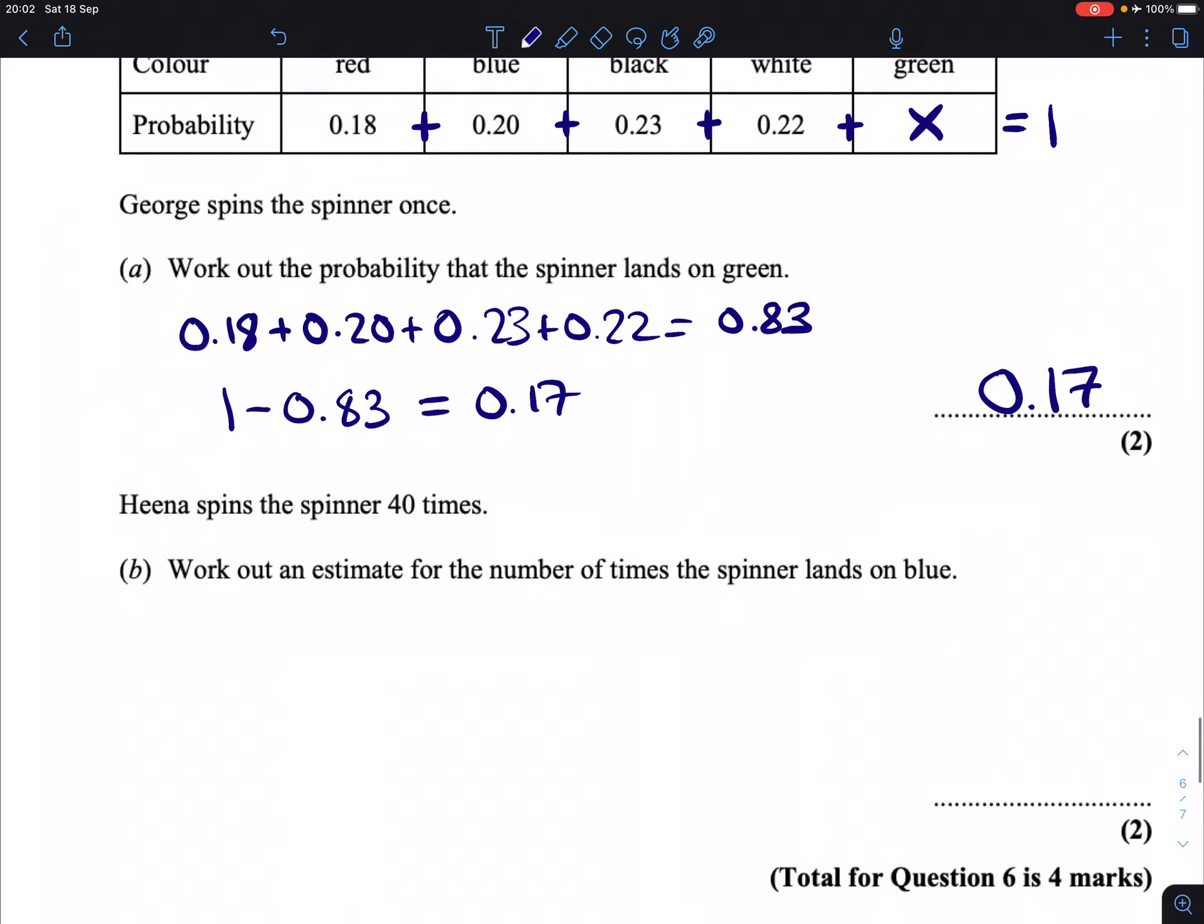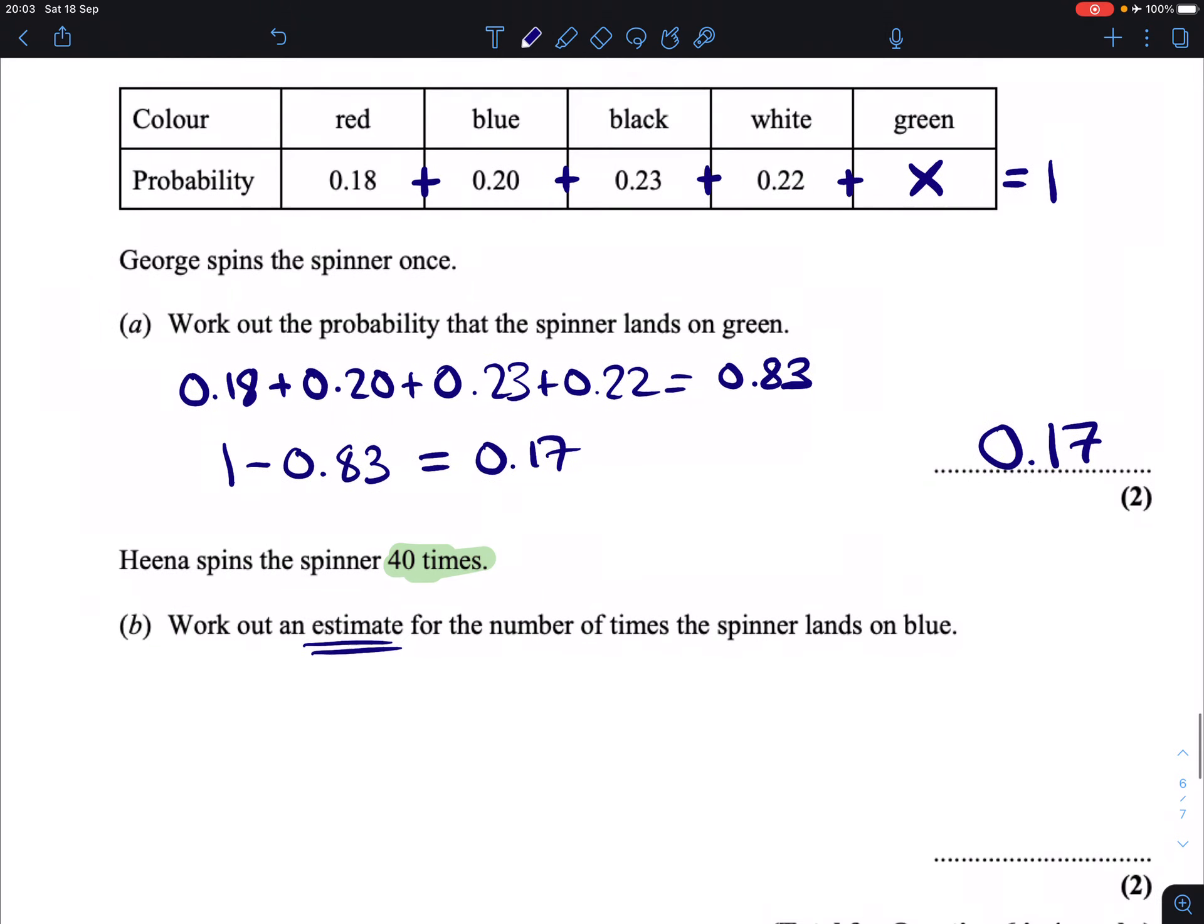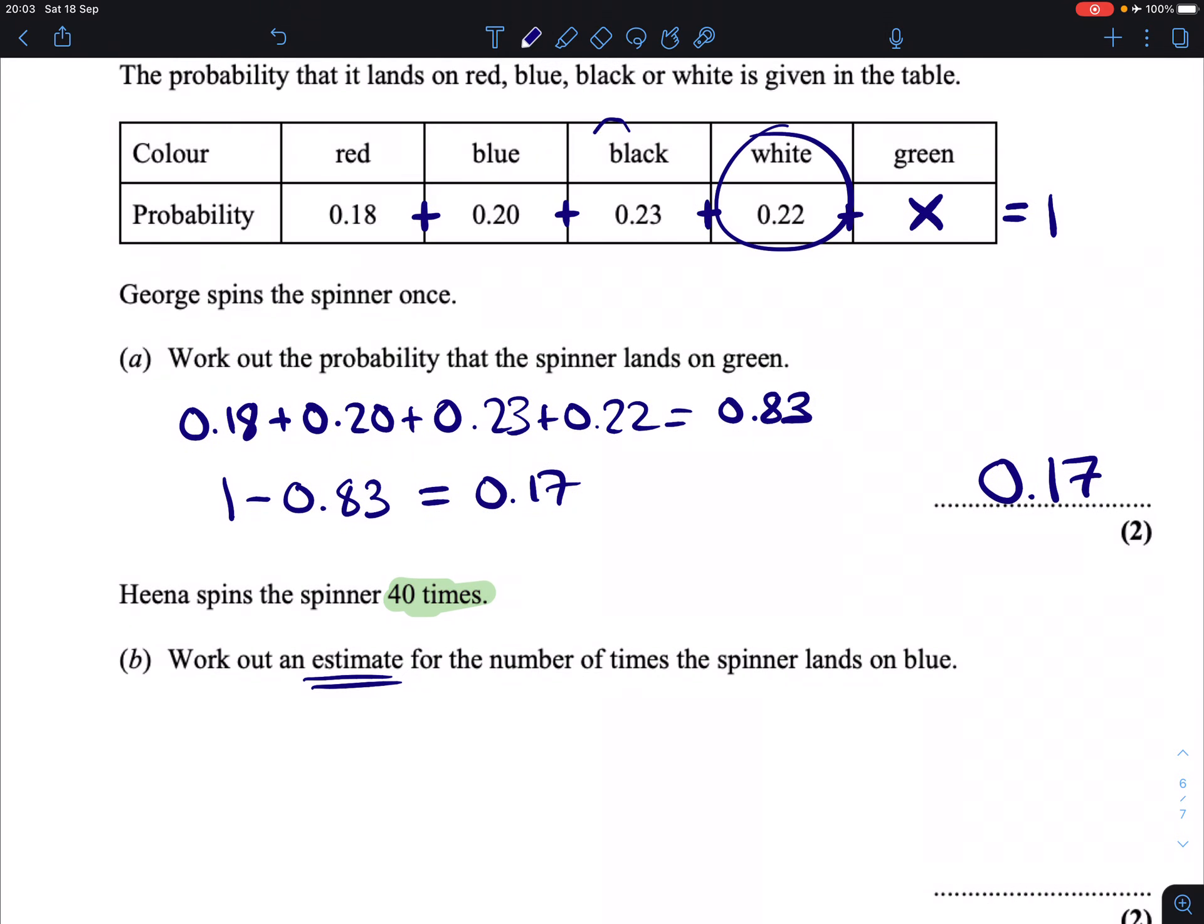Next part. He now spins the spinner 40 times. Work out an estimate for the number of times the spinner lands on blue. Now, the reason this is an estimate is that we can't predict the future. As much as we know that the spinner is going to be spun 40 times and as much as we know what the probability of each of these colors is, there is a most likely outcome that's going to happen, which we're going to look at, but there's no guarantee of this happening.